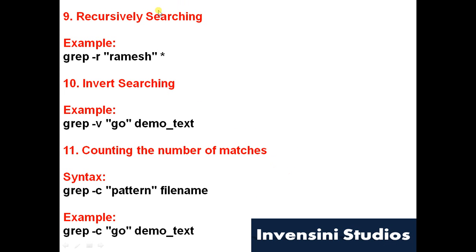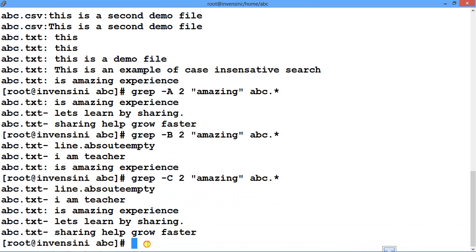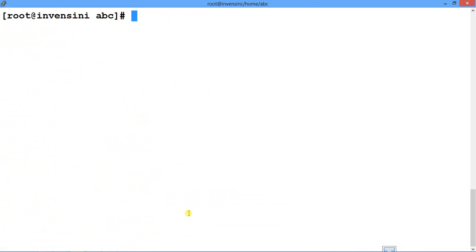By default, grep looks for matches only in the current directory. To search recursively through all subfolders, use hyphen-R (-r). To invert the search — showing lines that do not match — use hyphen-V (-v). If you just want the count of matches rather than the actual lines, use hyphen-C (-c).